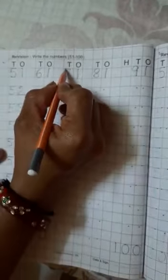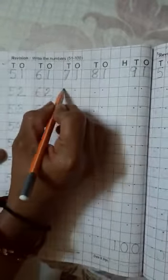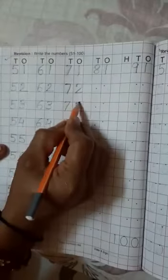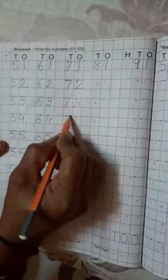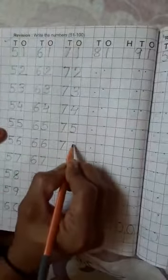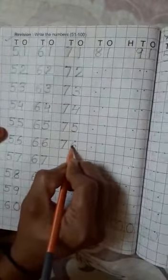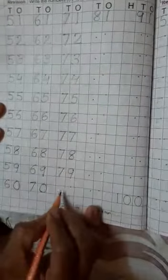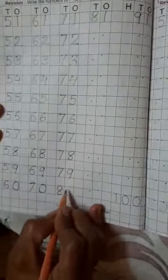70 की लाइन की लाइन करेंगे. 7 की लाइन. 7, 1, 71. 7, 2, 72. 7, 3, 73. 7, 4, 74. 7, 5, 75. 7, 6, 76. 7, 7, 77. 7, 8, 78. 7, 9, 79. 8, 0, 80.